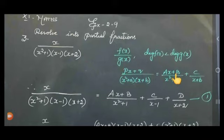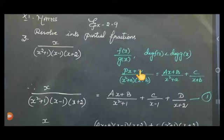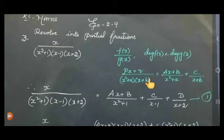There is a rule for this format. If px + q is a linear factor or in quadratic form, but the denominator degree will be smaller. Now the denominator will have linear factors — ax + b is a linear factor.